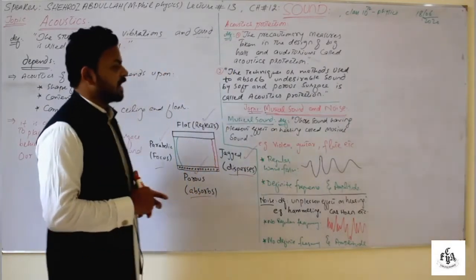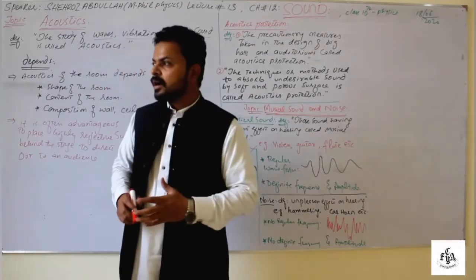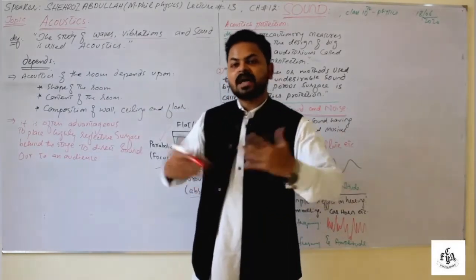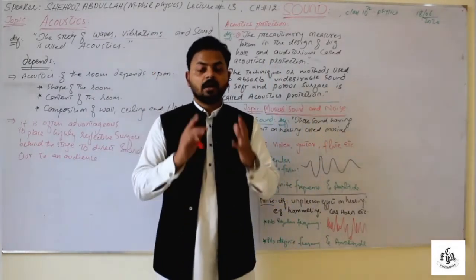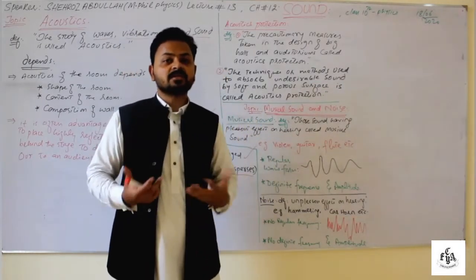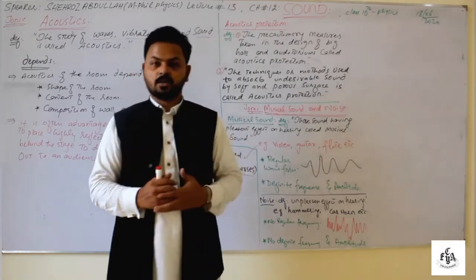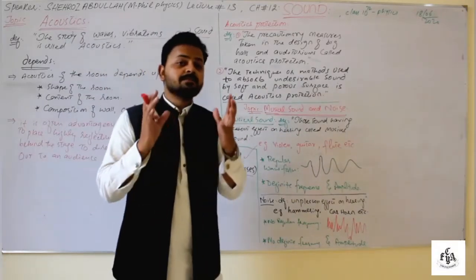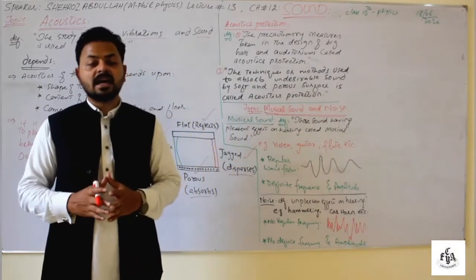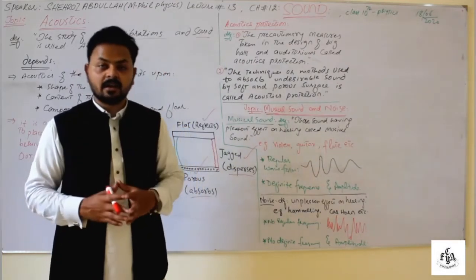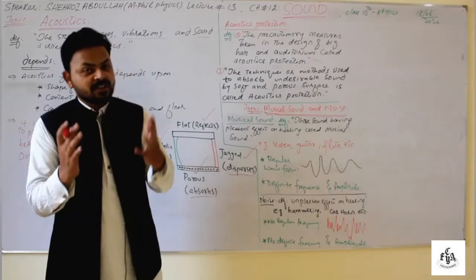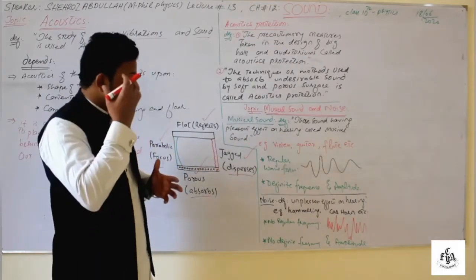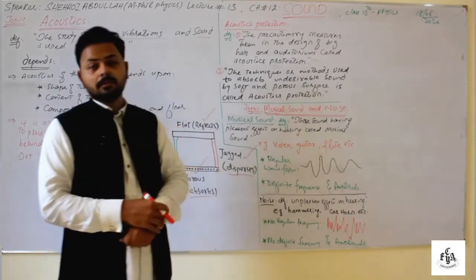Now, musical sound and noise. There are two kinds of sounds: one looks good to your hearing, the other looks bad. Musical sound is those sounds which have a pleasant effect on hearing — for example, flute, guitar, and violin. Musical sound has a specific frequency, a specific amplitude, and continuation. It doesn't look bad to your CNS system, so it looks good.